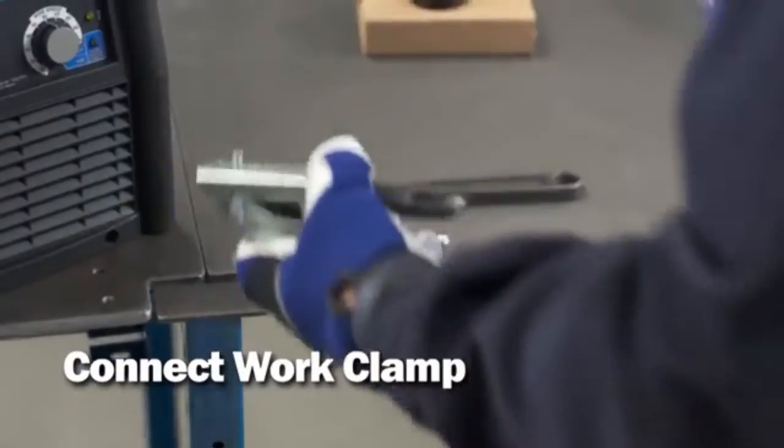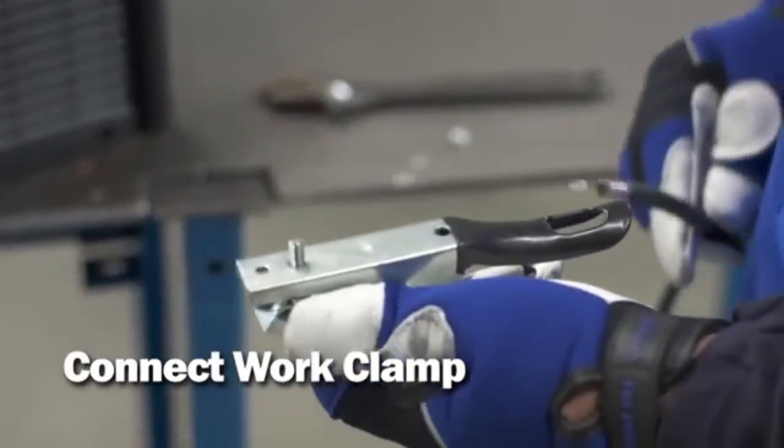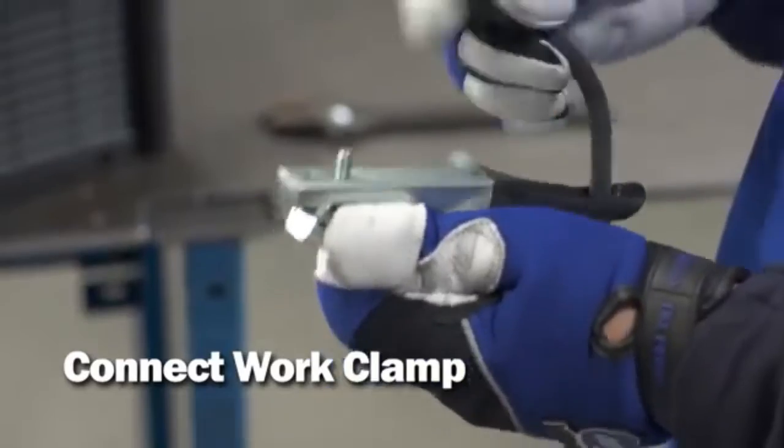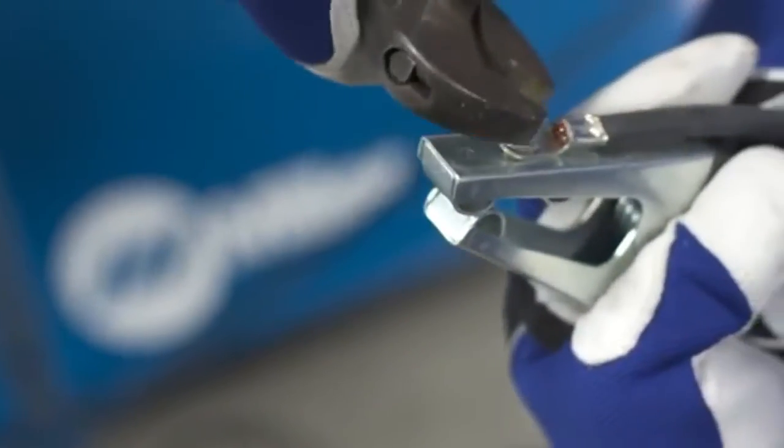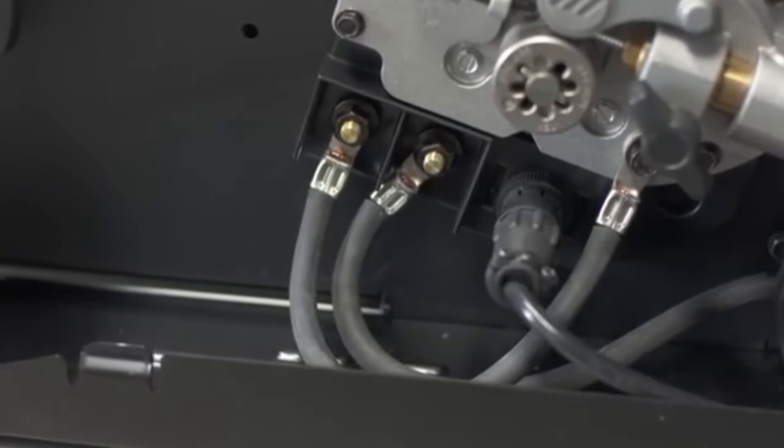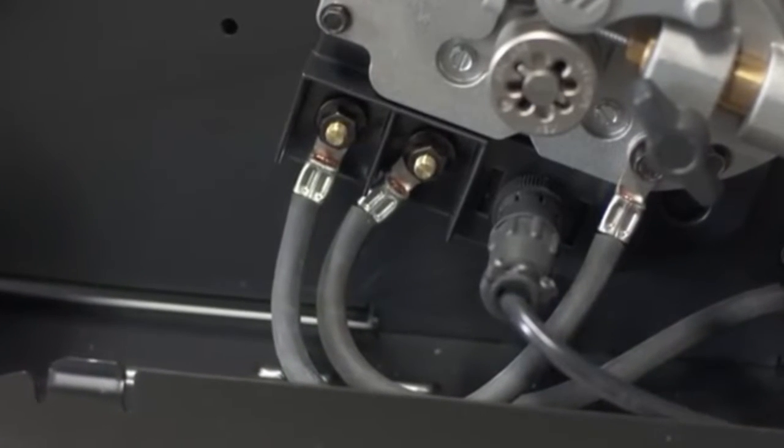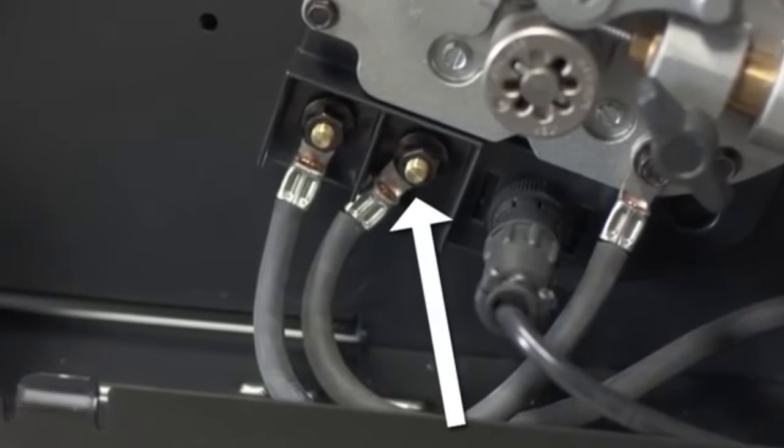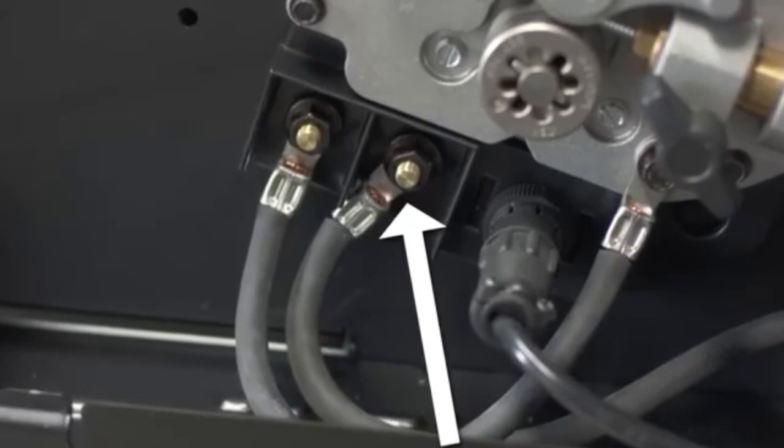Route the lug end of the work lead through the work clamp and land the lug on the outside of the clamp. Using a wrench, tighten the nut on the clamp. For solid wire with shielding gas, the work cable should be connected to the negative output terminal. This is how it is shipped from the factory.